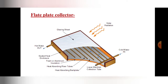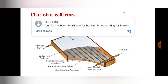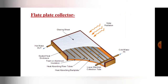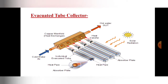There are different types of components inside the flat plate collector: a sealed heat enclosure, foam or aluminum insulations, heat absorbing riser tubes, and heat absorbing back plates. The next non-concentrating type is the evacuated tube collector, or ETC.